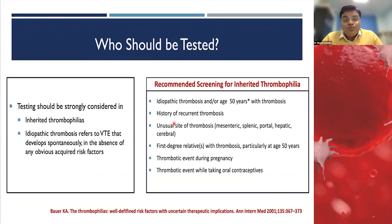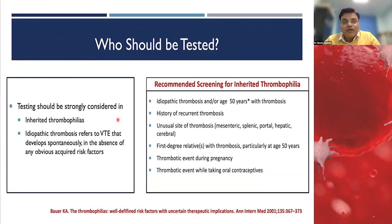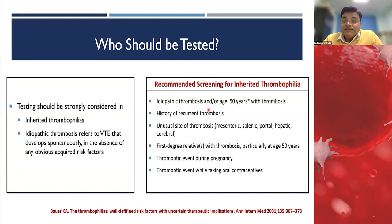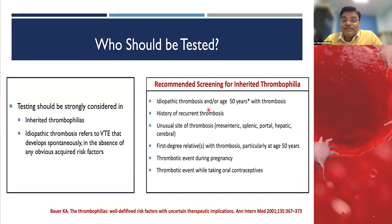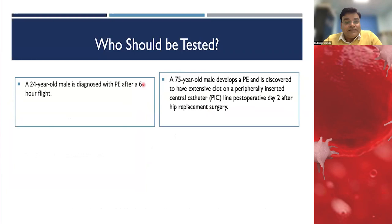The question is: whom should we test? Recommendations state that inherited thrombophilia workup is indicated when there is no other acquired risk factor associated with idiopathic thrombosis. Guidelines recommend testing in: idiopathic thrombosis in young adults under 50 years, history of recurrent thrombosis, unusual site thrombosis such as axillary, splenic, portal, hepatic, or cerebral vein thrombosis, first-degree relatives with thrombosis under 50 years, and any thrombotic event occurring during pregnancy or while on oral contraceptives.